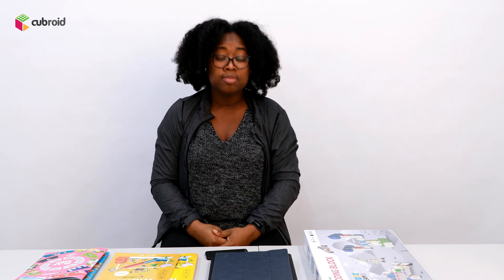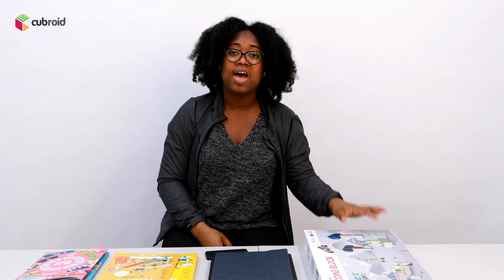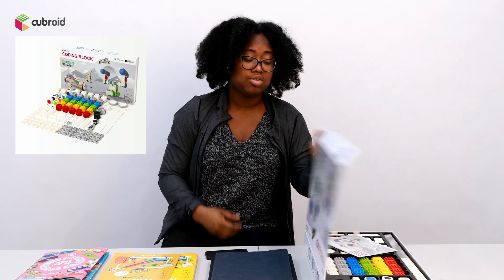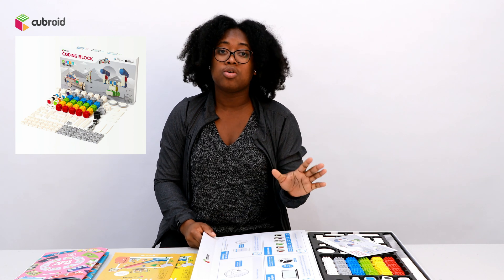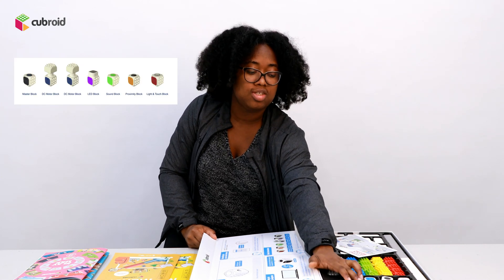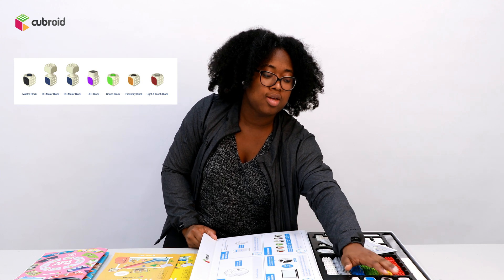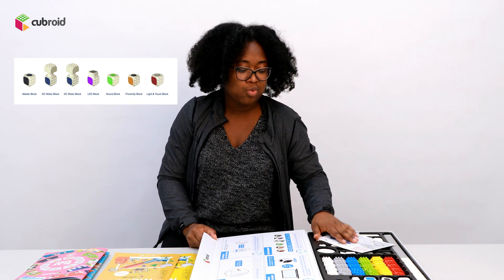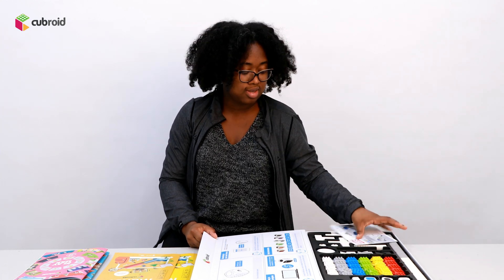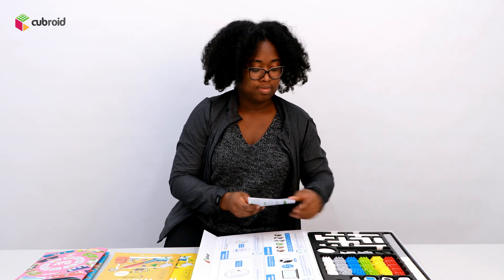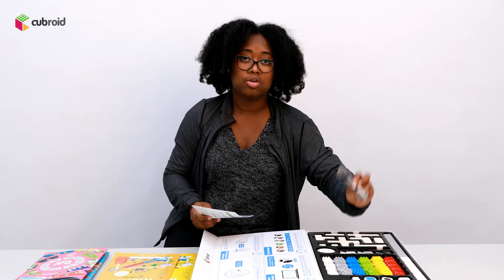To get started with the coding block, first of all you need to have the hardware — that is the coding block package, in which you can find seven codable blocks and sensors. We have the LED, two DC motors, one master block, a sound block, the proximity sensor block, and also the light and touch block, together with the building blocks, connectors, and a USB to charge the coding blocks.